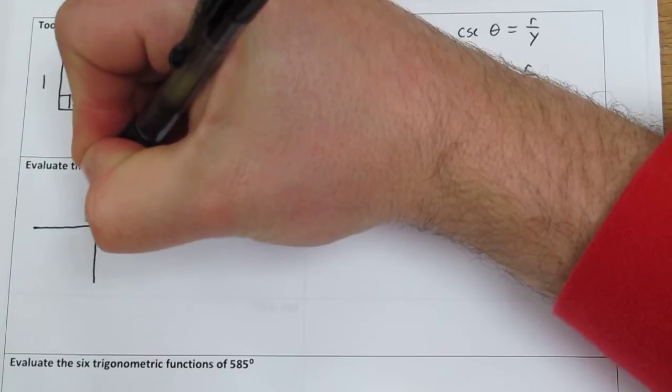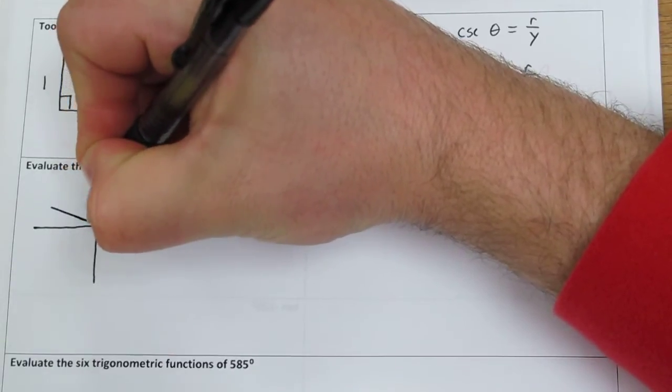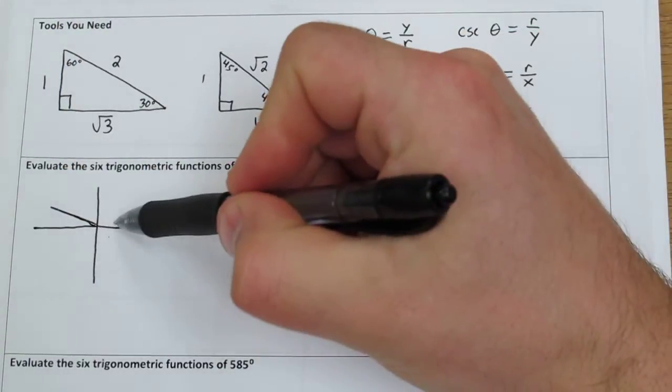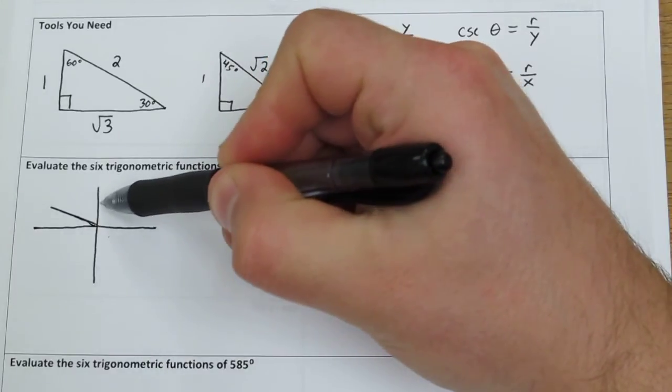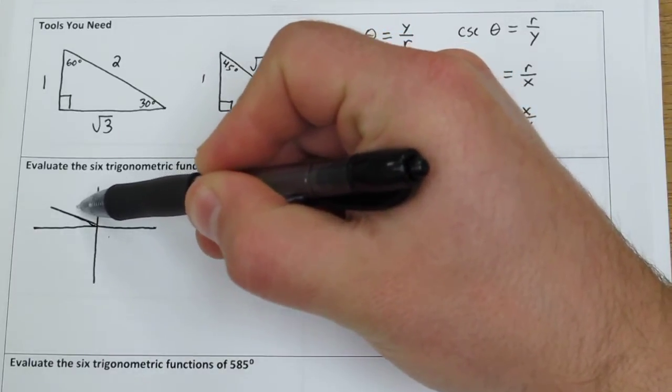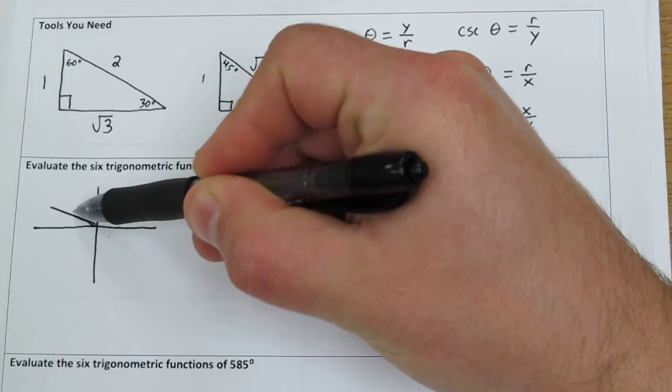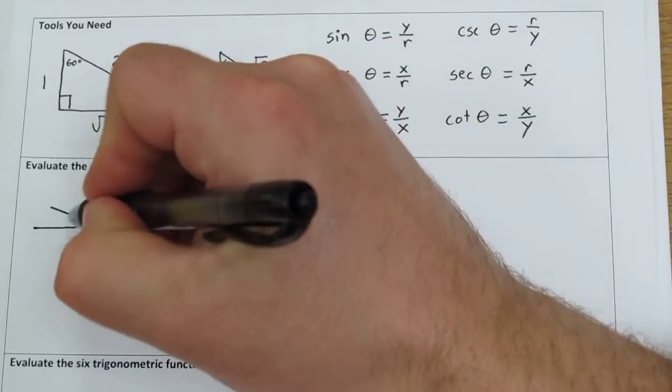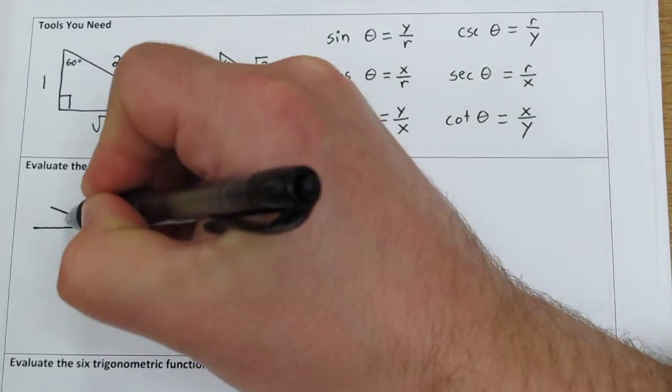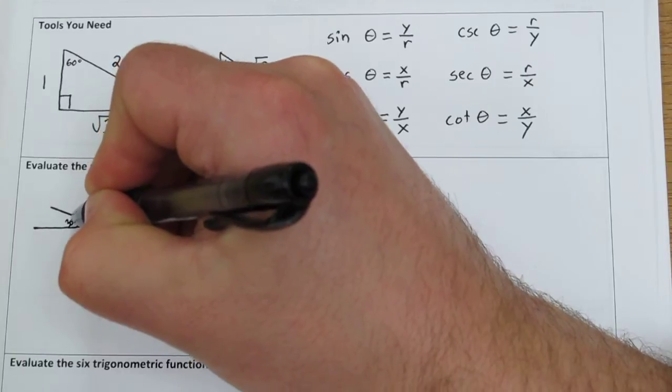So it's right there. Again, all the way around is 360, then 450, then another 60 degrees gets us to 510. But here's what's important: this angle right here, the reference angle, is 30 degrees.